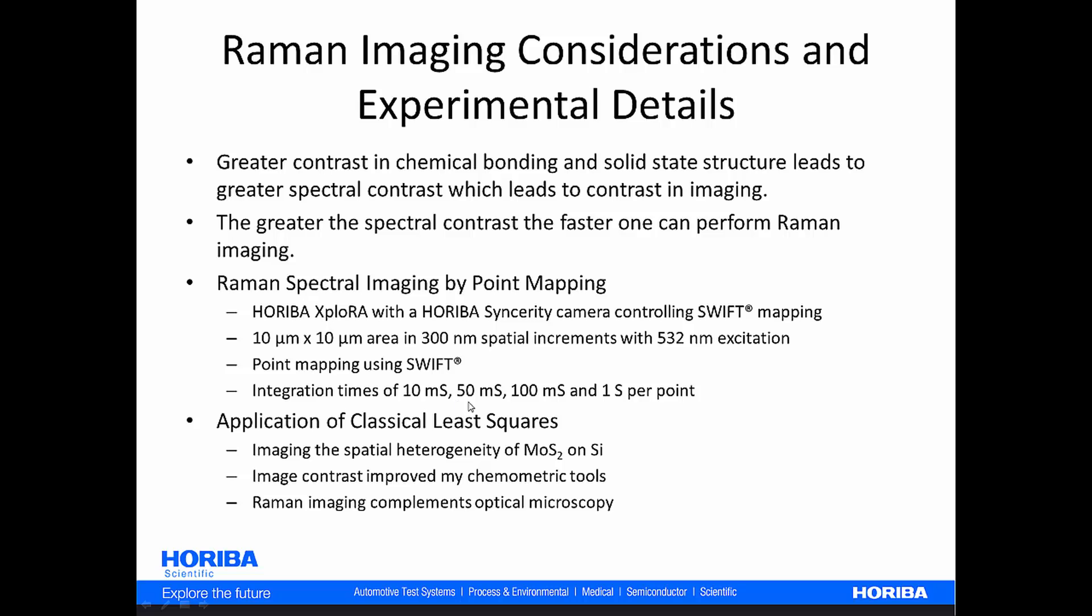Those are times per point. So 10 milliseconds, 50 milliseconds, 100 milliseconds, and one second per point. And finally, we'll show you how the application of a classical least squares algorithm can really help you in imaging, particularly fast Raman imaging.